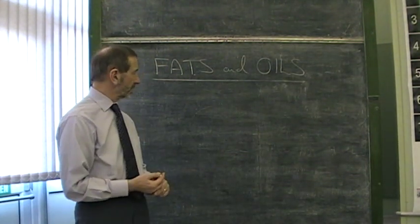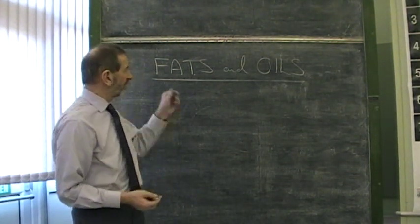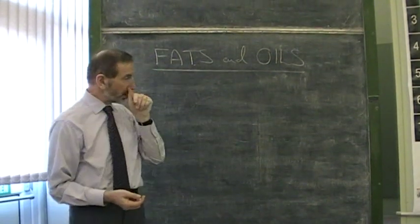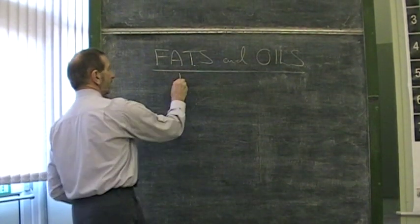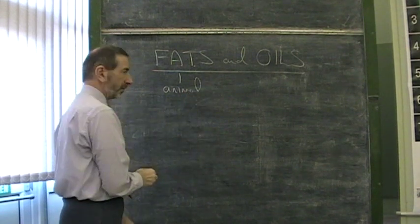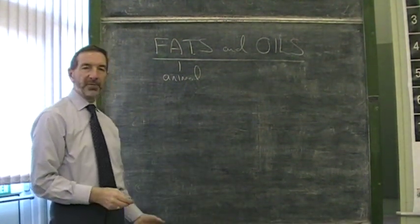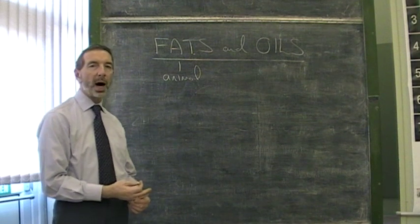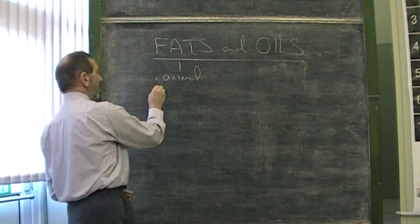Fats and oils. First of all, we'd better point out the origin of these substances. The fats have an animal origin. For example, animal fat is something called suet or lard. It's solid.